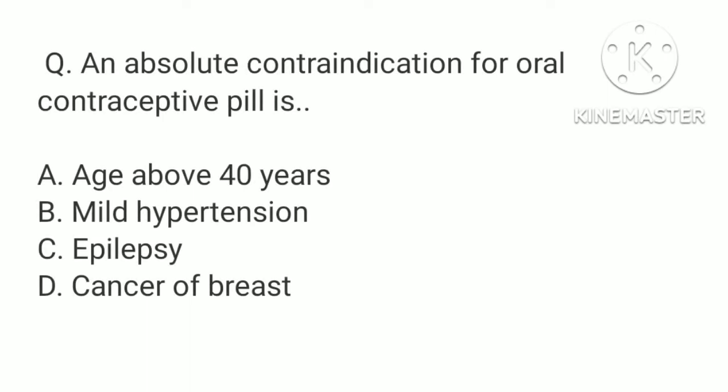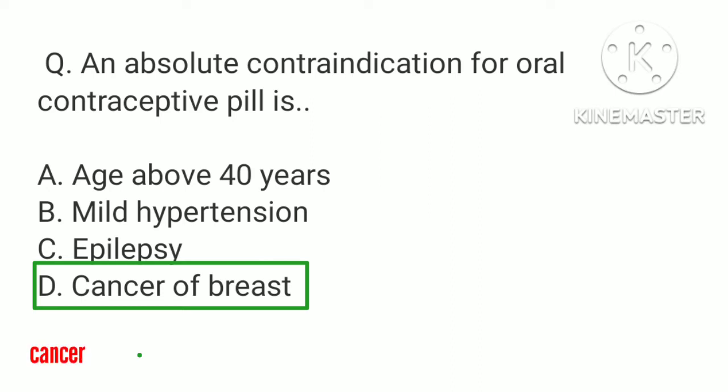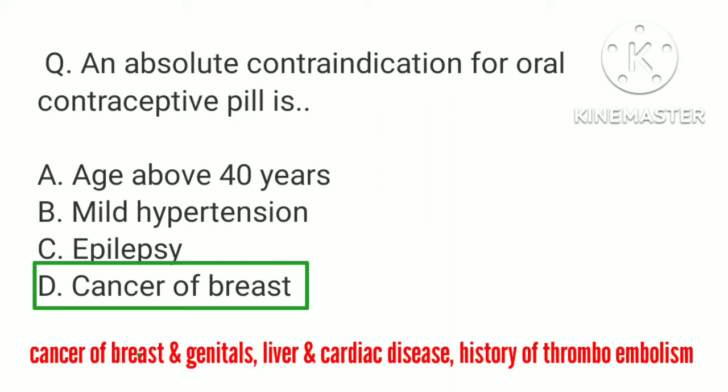An absolute contraindication for oral contraceptive pill is: a. Age above 40 years, b. Mild hypertension, c. Epilepsy, d. Cancer of breast. The correct answer is d. Cancer of breast. Absolute contraindications of oral contraceptive pills are cancer of breast and genitals, liver and cardiac disease, history of thromboembolism, etc.